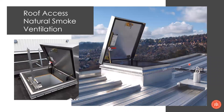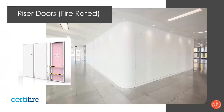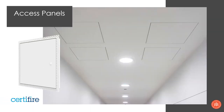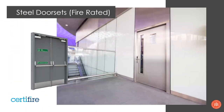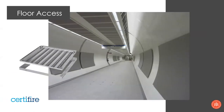Today we'll start with roof access, then look at natural smoke ventilation, fire-rated riser doors, access panels, steel doors, and finally floor access — selecting the correct product early and understanding the floor finish. As shown in this picture of an underground station, we've used a multi-part unit and tried to hide it as much as possible so the architect can keep the aesthetics nice and clean.